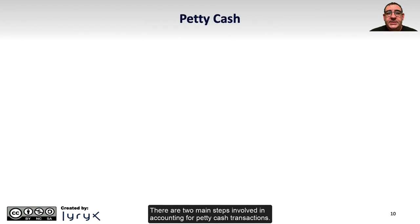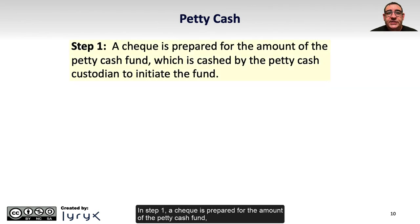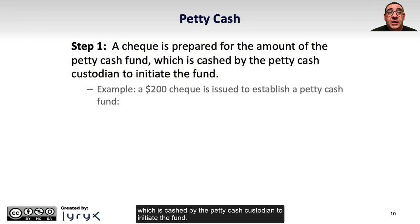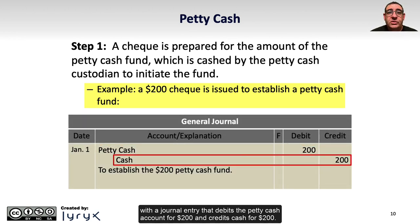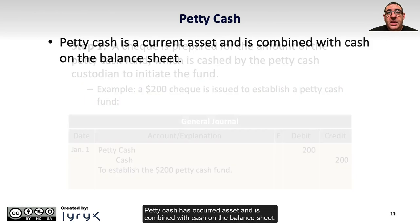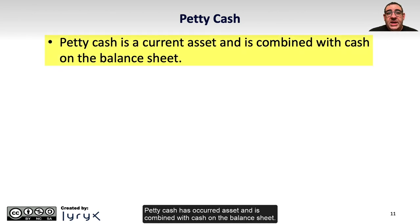There are two main steps involved in accounting for petty cash transactions. In Step 1, a cheque is prepared for the amount of the petty cash fund, which is cashed by the petty cash custodian to initiate the fund. For example, a cheque for $200 is issued to establish a petty cash fund with a journal entry that debits the petty cash account for $200 and credits cash for $200. Petty cash is a current asset and is combined with cash on the balance sheet.